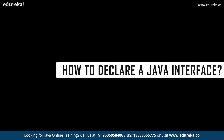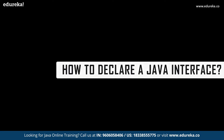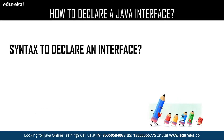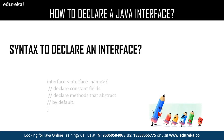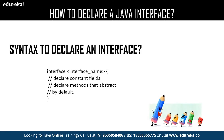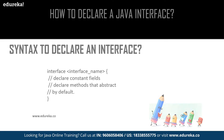Now let us have a quick revision about how to declare an interface. This is the syntax for declaring an interface, where you use the interface keyword followed by the name of your interface, and inside the interface you can declare your methods. By default, all the methods which you declare in an interface are considered to be public.